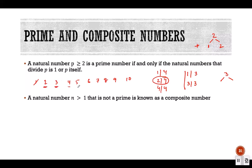A prime number is one where only 1 and the number itself are divisors. Examples are 2, 3, and 5 — the divisors of 5 are just 1 and 5. For 7, the divisors are 1 and 7. But 6 is divided by 1, 2, 3, and 6, so 6 is not a prime number. So among small numbers: 2, 3, 5, and 7 are prime; 4, 6, 8, 9, 10 are not.